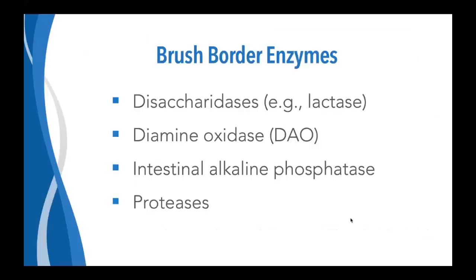Brush border enzymes are a very important function of the duodenum in particular. These include disaccharidases — the best known being lactase — as well as diamine oxidase (DAO) which metabolizes and breaks down histamine, intestinal alkaline phosphatase which is very important for a healthy intestinal lining and overall GI health, and various proteases. A study titled 'Disaccharidase Deficiencies in Children with Chronic Abdominal Pain' finds that a large proportion of patients with chronic abdominal pain have confirmed deficiencies in disaccharidases, meaning factors like H. pylori, Giardia, various drugs, and nutrient deficiencies affecting small intestinal function can negatively impact these brush border enzymes, leading to maldigestion and malabsorption.